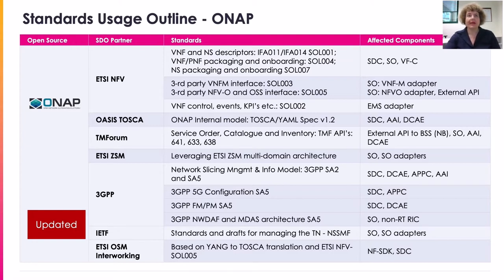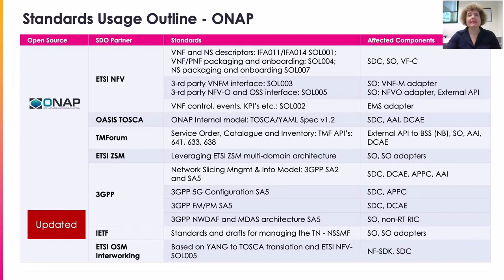3GPP has developed quite a few new standards over the past three years, and the ONAP network slicing use case is fully following those. On 3GPP, slicing has been extended quite a lot in Release 17 and now in Release 18. What is being defined by 3GPP — actually by the same people who participate in ONAP activity — is being implemented for network slicing use cases, with SDC, APSIS, and DCAE as the most impacted entities.